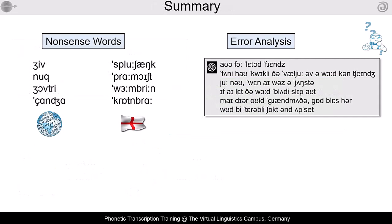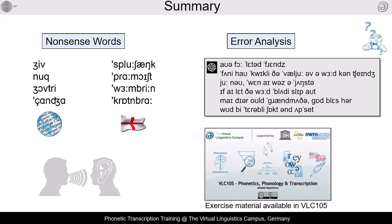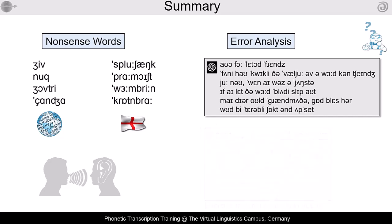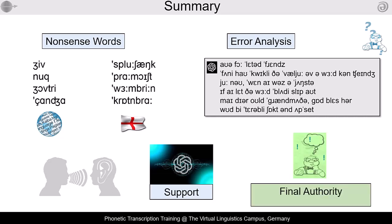To summarize: the use of nonsense words and error analysis are reasonable options for practicing phonetic transcription even in the age of large language models. Beyond the introduction of the principles of articulatory phonetics and the use of the phonetic alphabet, the effective teaching of phonetic transcription necessitates exercises and practice materials to familiarize our students with these principles, using audio input wherever possible. Large language models can be used for support. Human expertise, however, will always be the final authority.